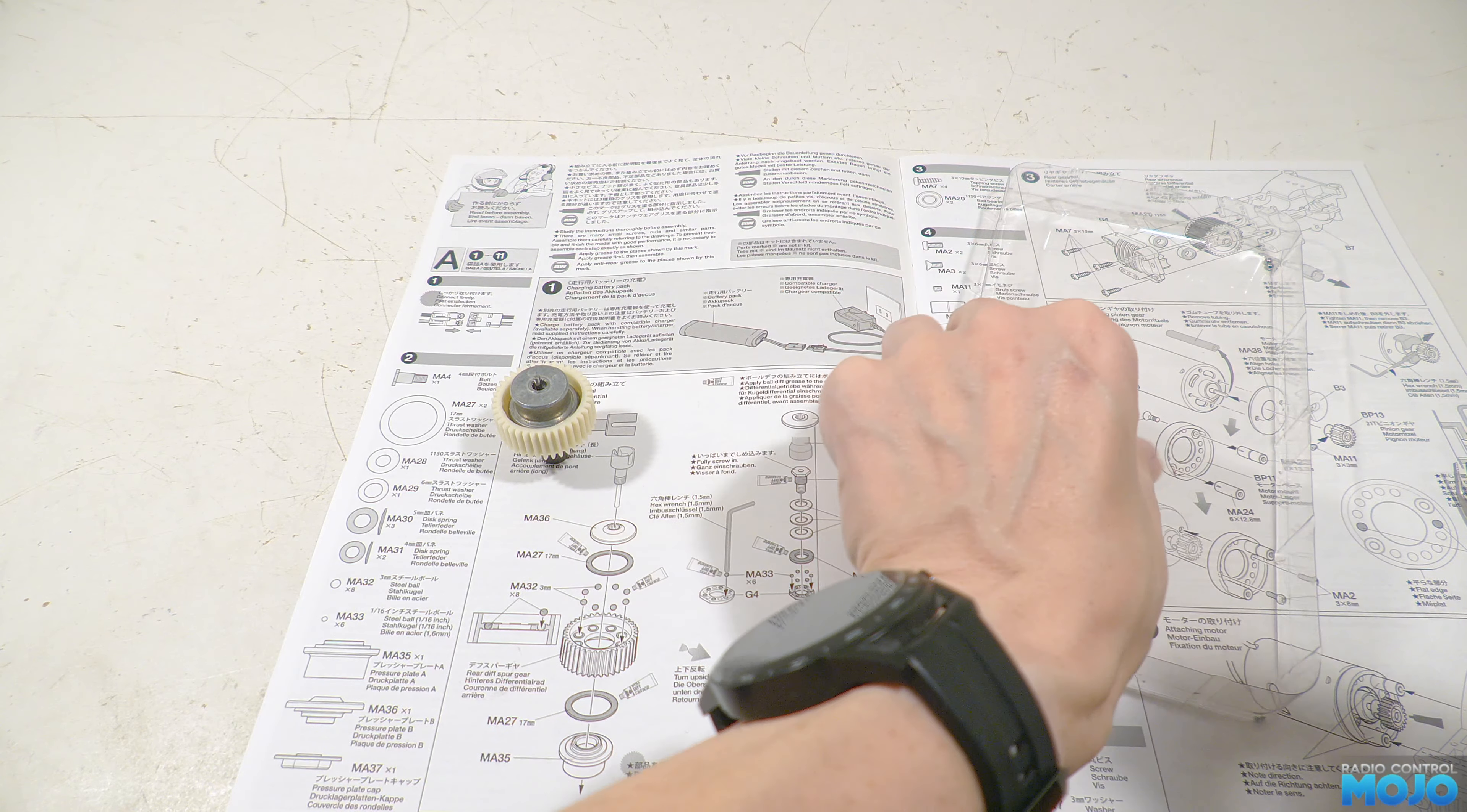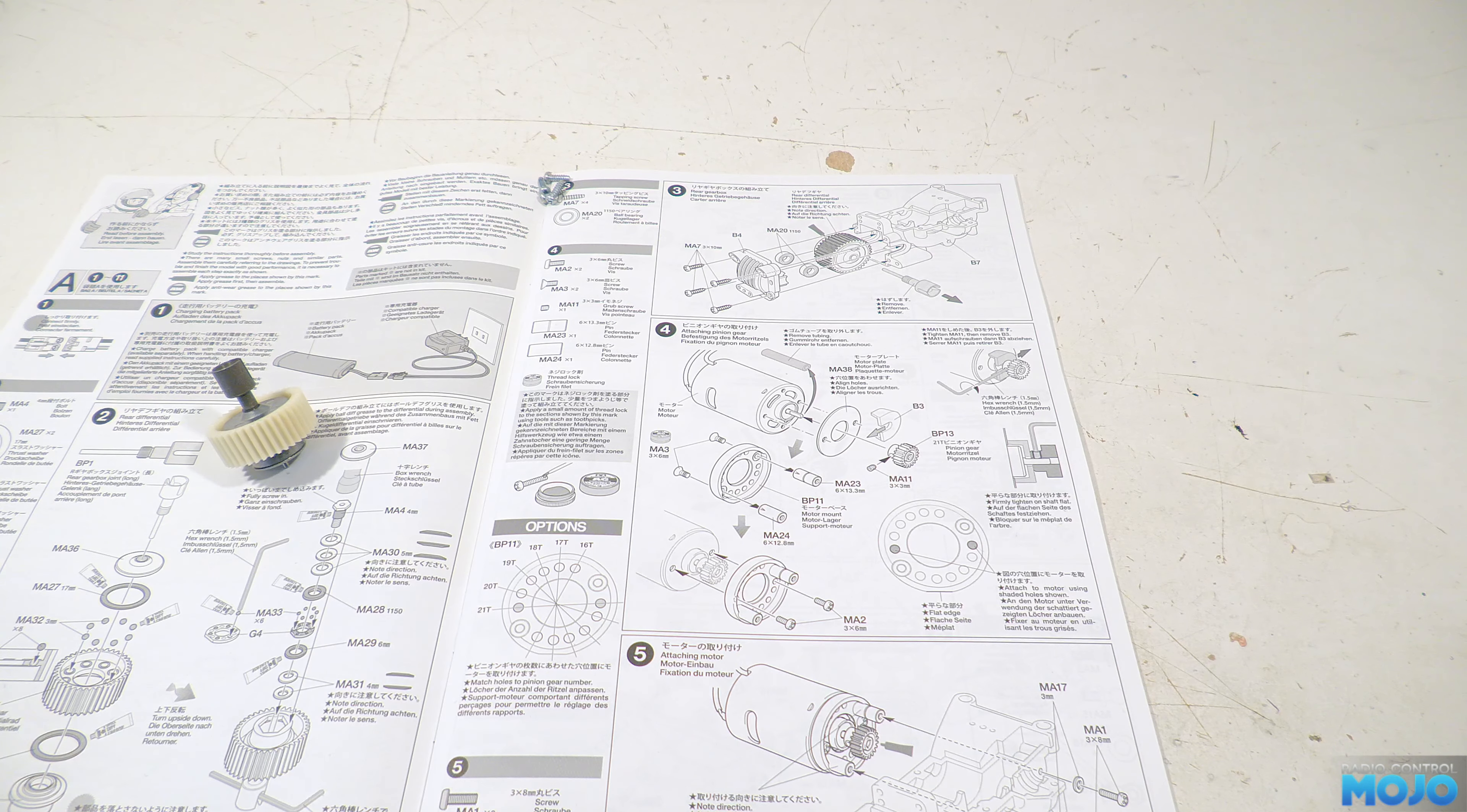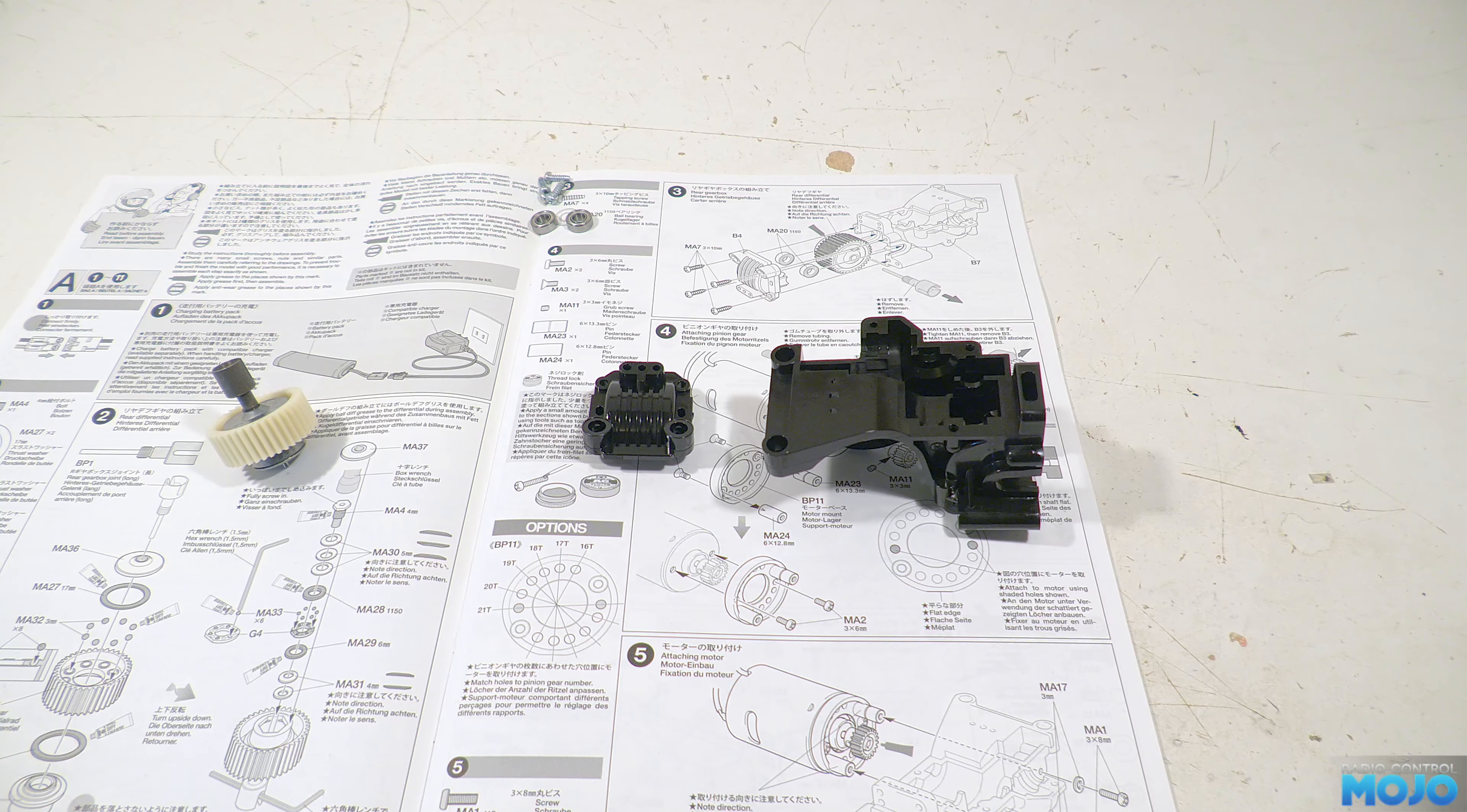Step three, the rear gear case. We need four 3x10 self-tappers, two 1150 bearings, B4 the diff cover, B7 the rear diff case, and the diff.